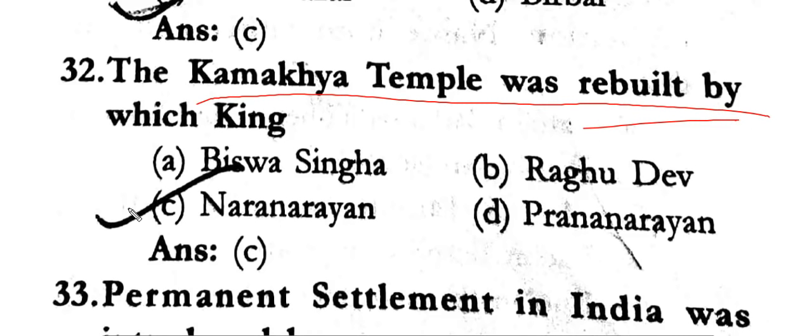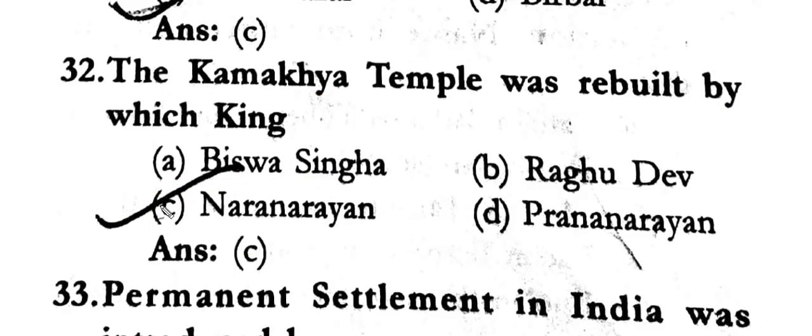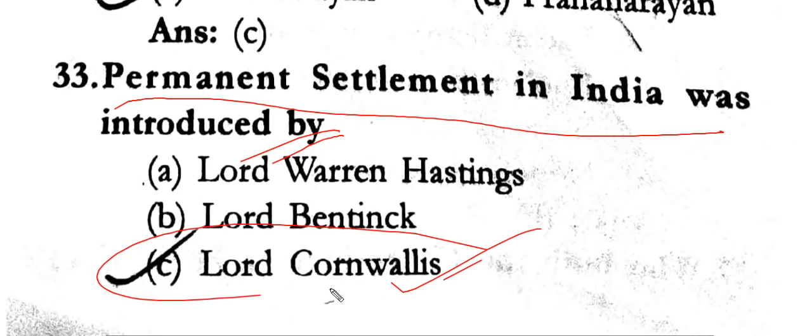Next question: the Kamakhya temple was rebuilt. Next question: the Permanent Settlement system in India was introduced by Lord Cornwallis. Lord Cornwallis introduced the Permanent Settlement system.